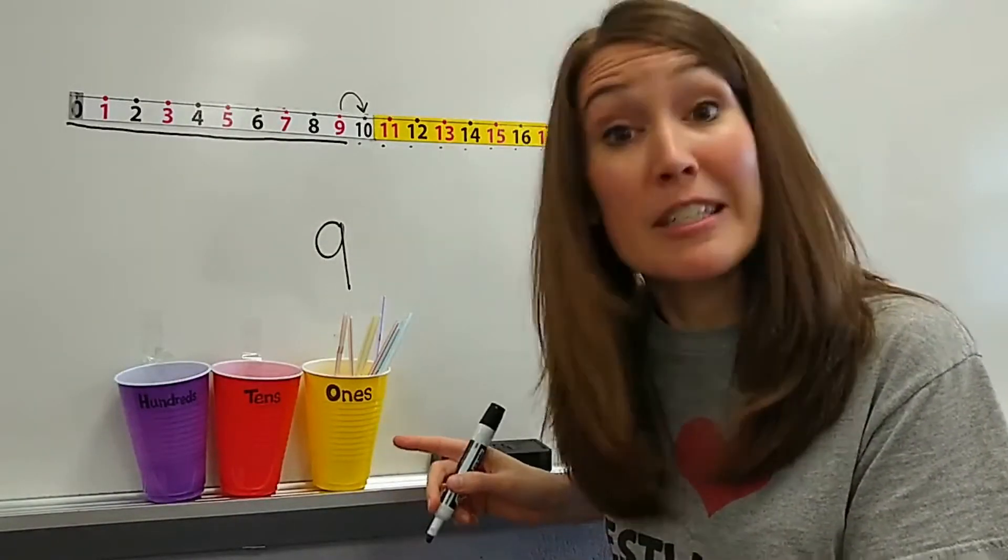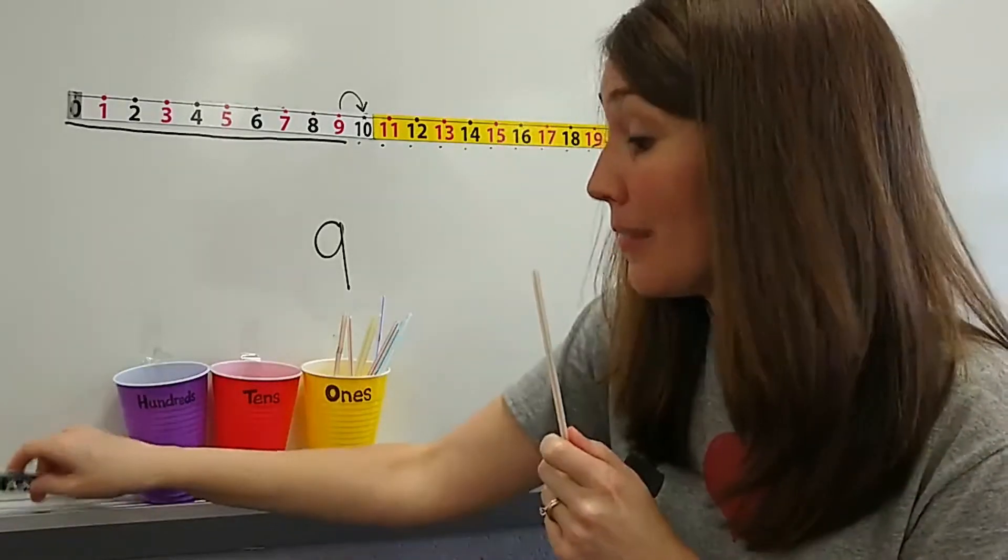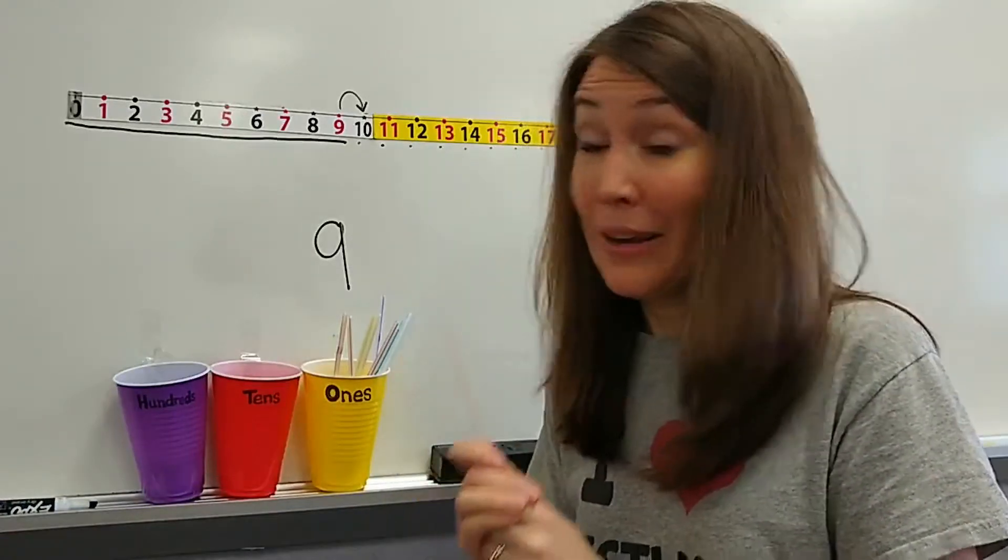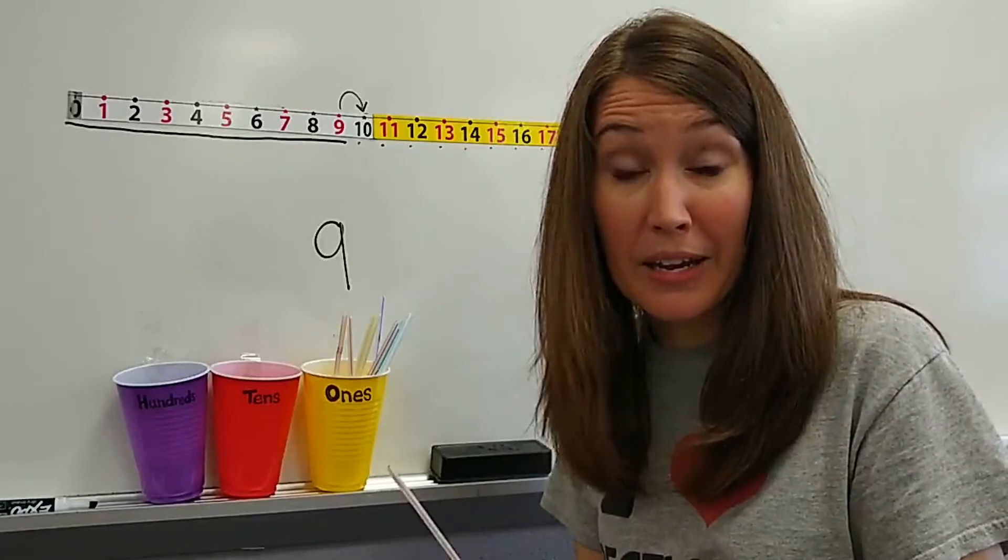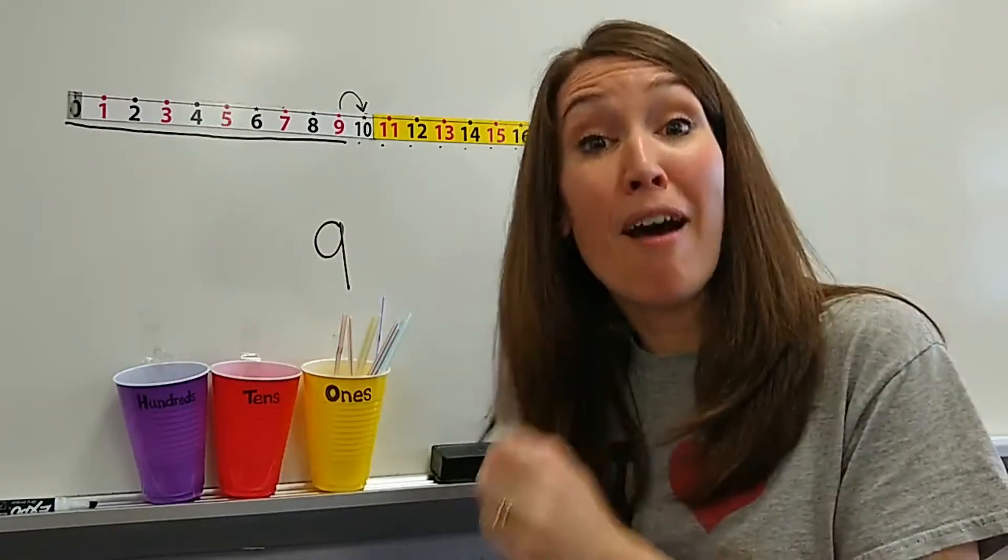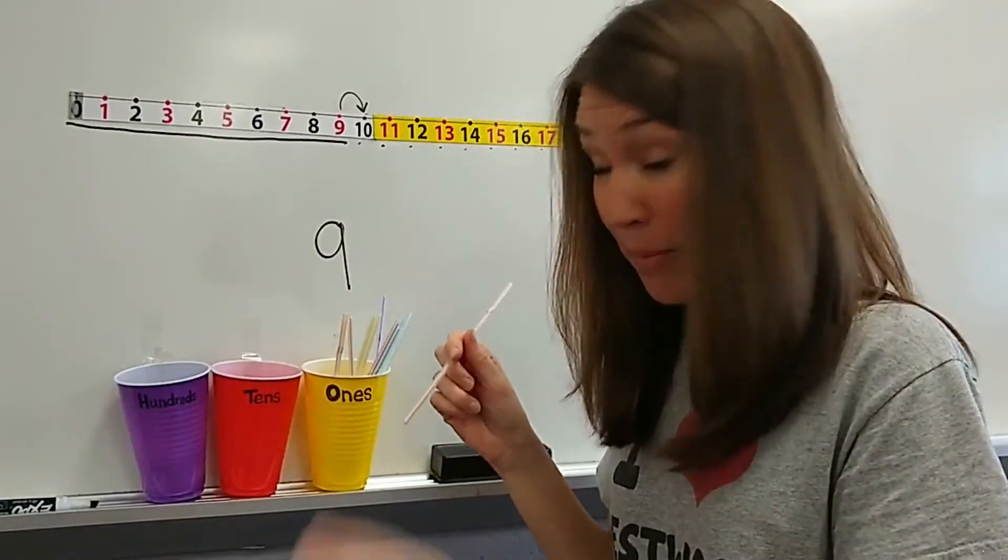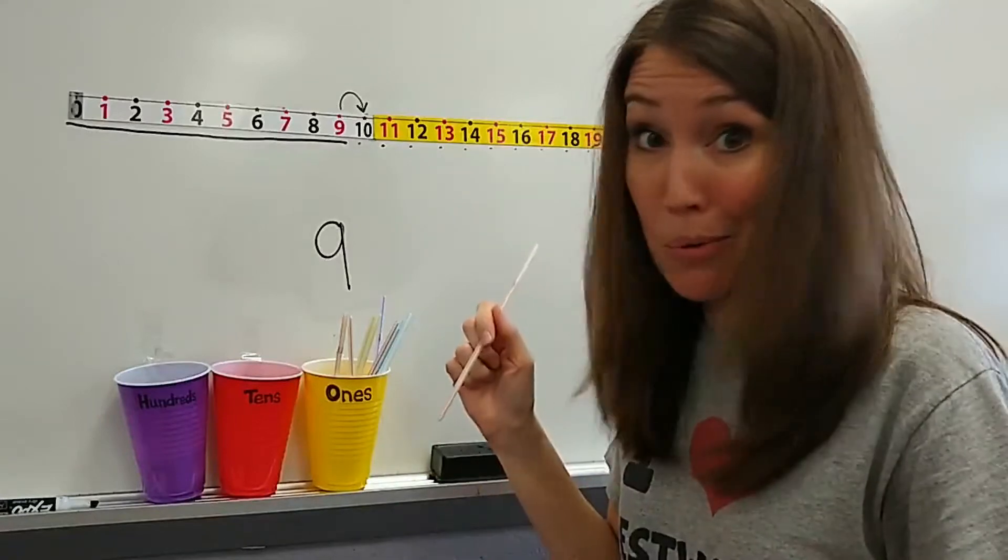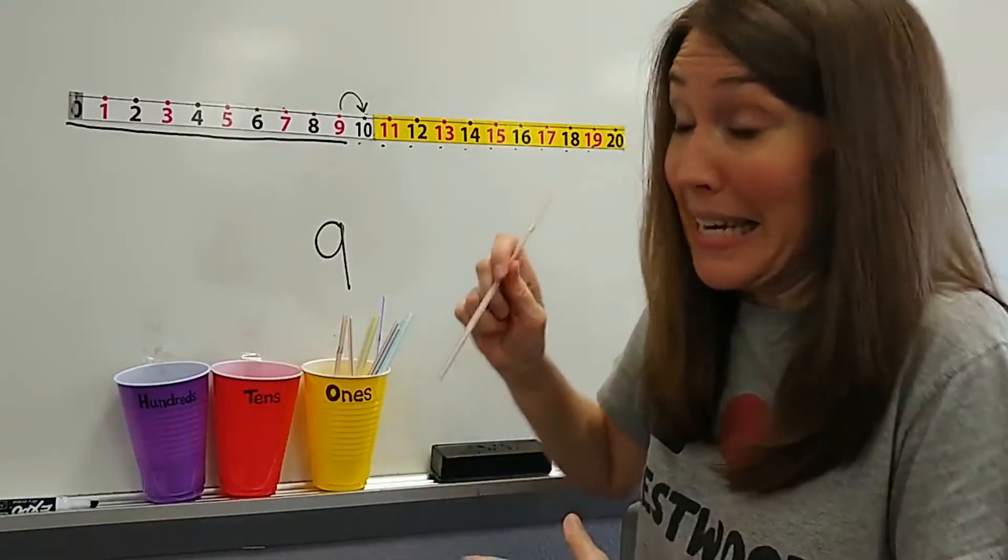So once I go to put this next straw in, something pretty amazing will happen. We cannot put 10 straws in the ones cup. We can only put nine. Once I try to put this in, they'll all jump out because they become a group of 10. Are you ready? This makes me nervous every time. I'm so afraid I'm going to drop them because I try to put one more in. After I have nine, when I go to 10, I can't stay in there.